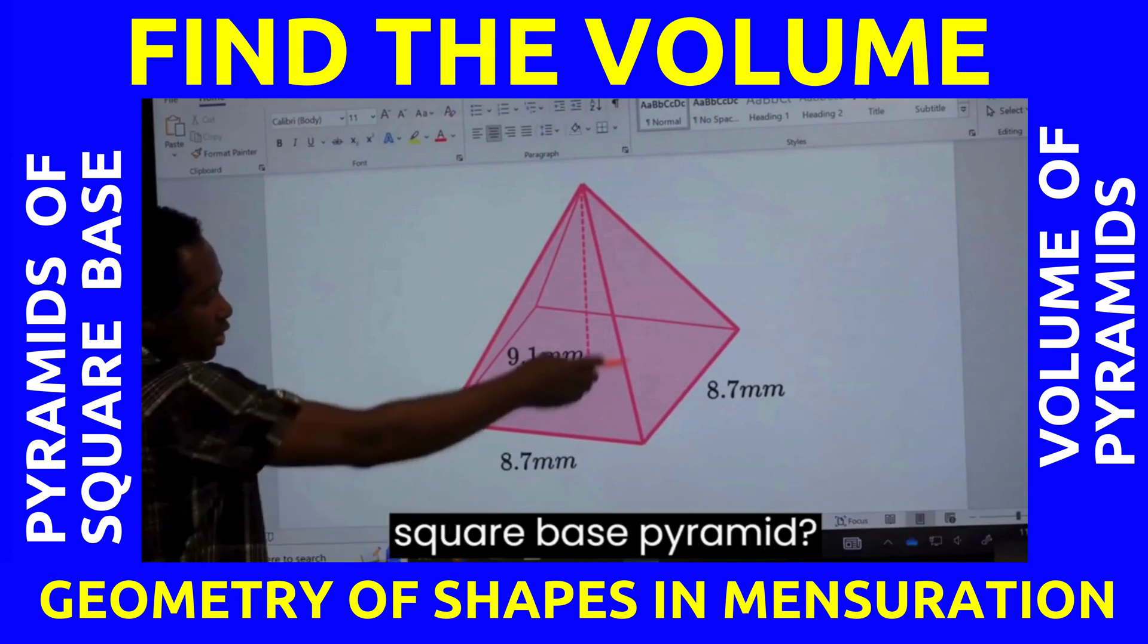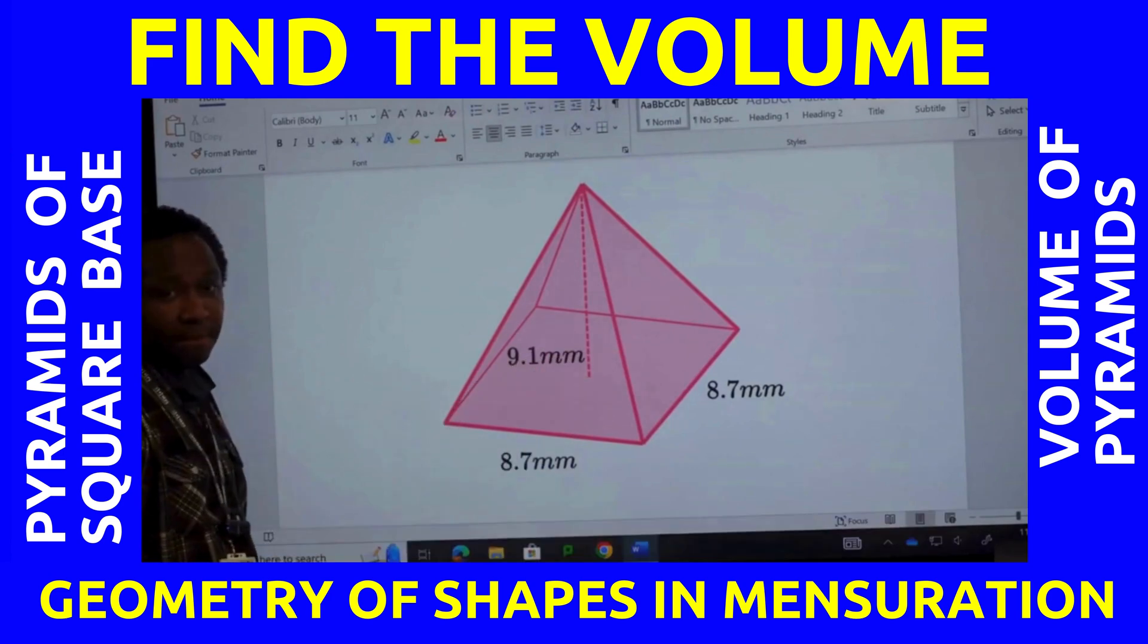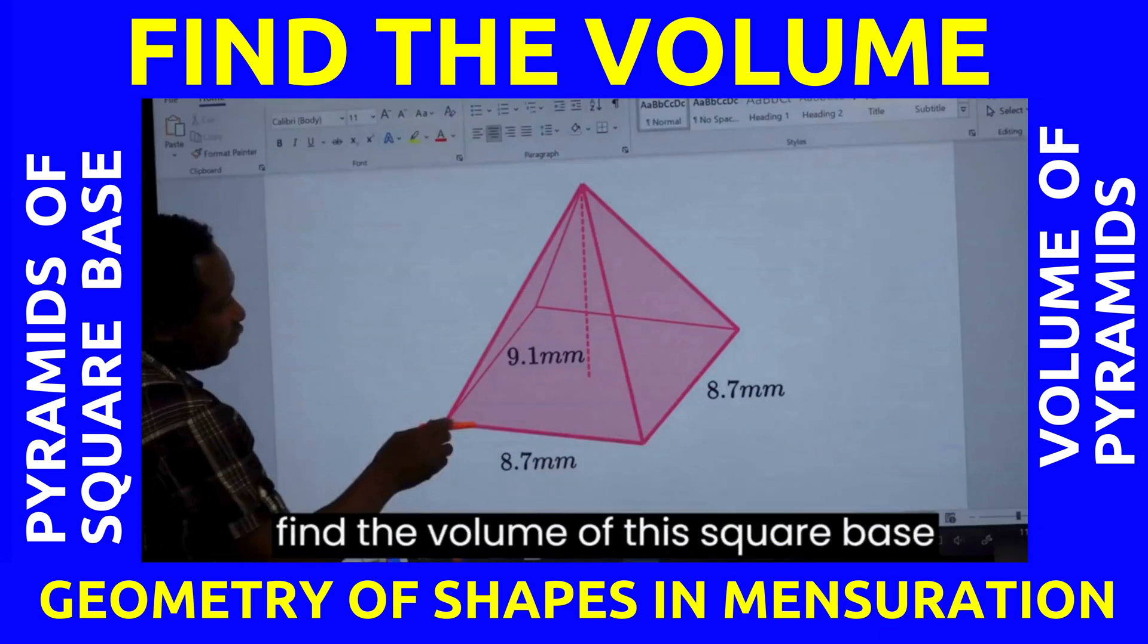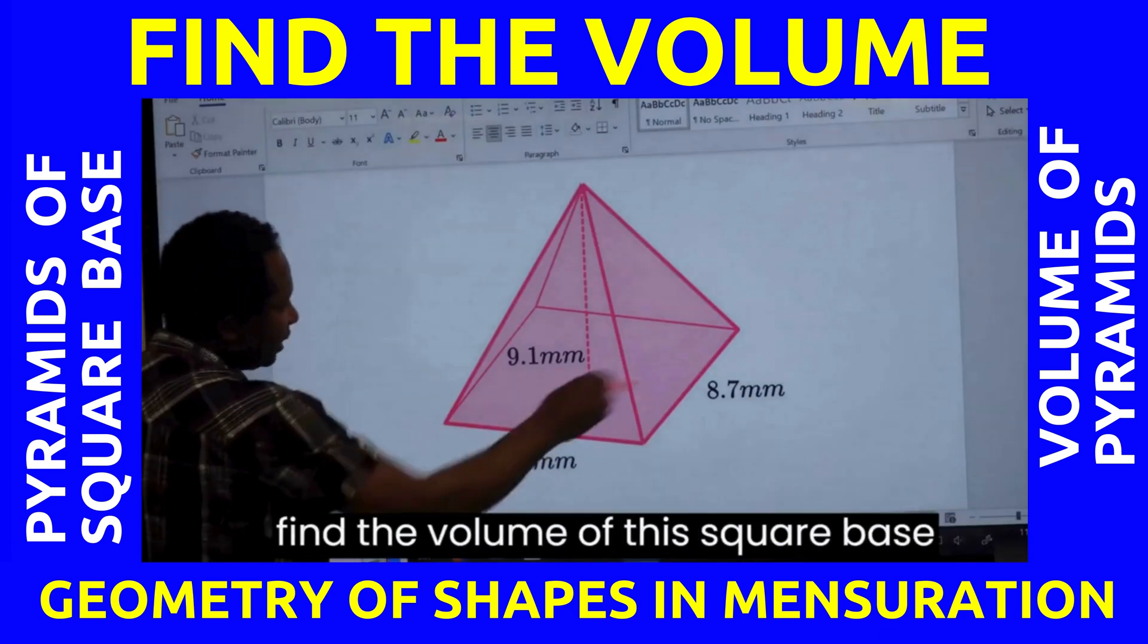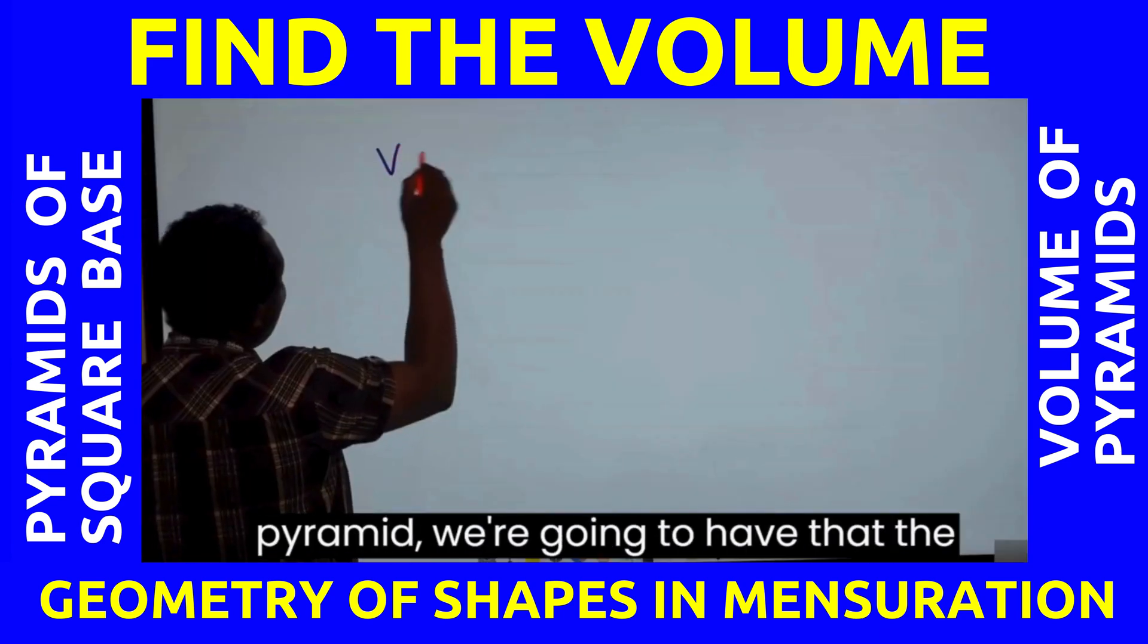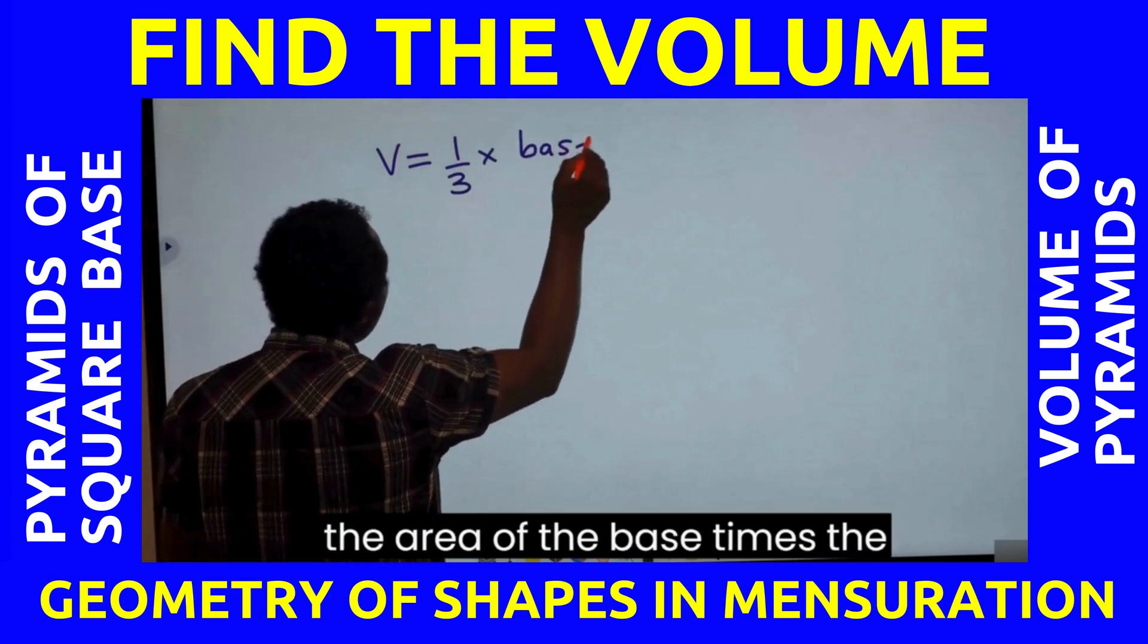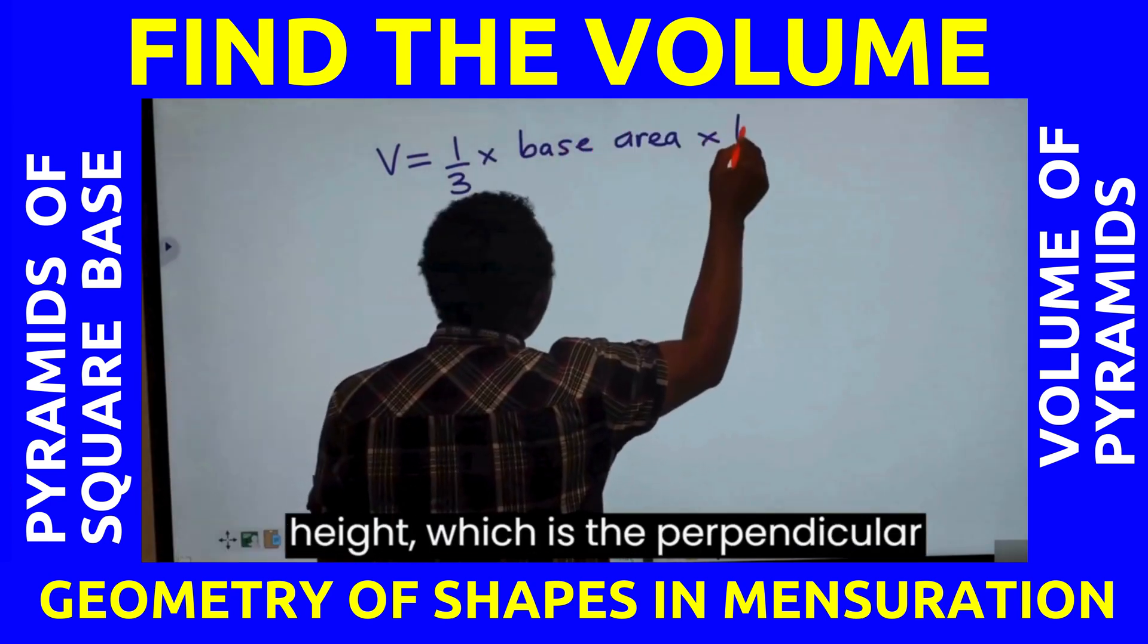Is this a rectangular or a square base pyramid? Square, because both sides are equal. To find the volume of this square base pyramid, we're going to have that the volume is 1 over 3 times the area of the base times the height.